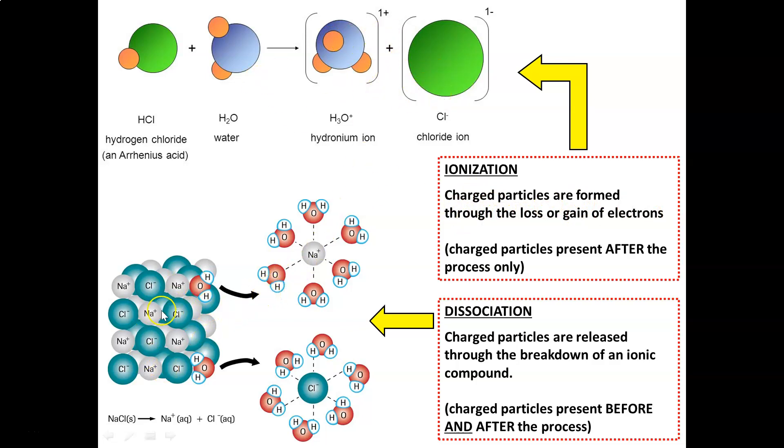On the other hand, dissociation means that you have an ionic compound where they were originally charged, breaking up or dissociating into ions that are surrounded by water. With dissociation, you had charged particles before and after the process, whereas ionization, you have charged particles present after the process only. But in both cases, charged ions are released.